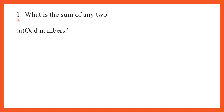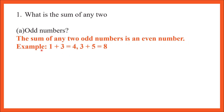Exercise 3.2, question number 1: what is the sum of any two odd numbers? Odd numbers are those numbers which are not divisible by 2. Even numbers are those which are divisible by 2. The sum of any two odd numbers is an even number.